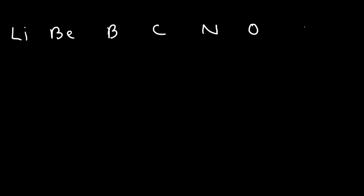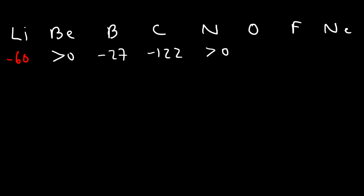Let's consider lithium, beryllium, boron, carbon, nitrogen, oxygen, fluorine, and neon. Lithium releases about negative 60 kJ/mol upon addition of an electron. For beryllium it's simply a positive value. Boron is about negative 27, carbon negative 122, and nitrogen is greater than zero — it's endothermic, not exothermic.